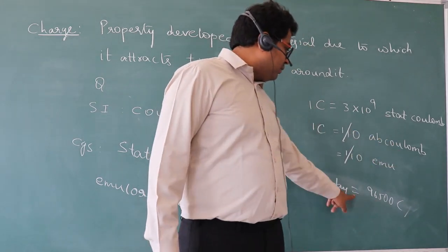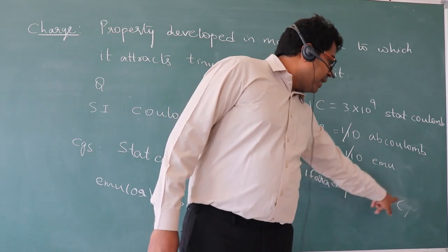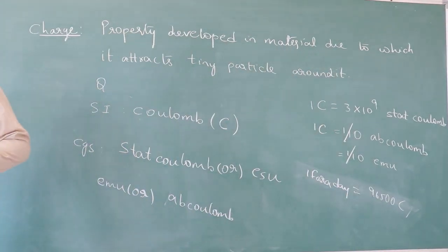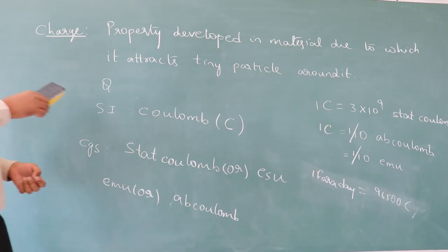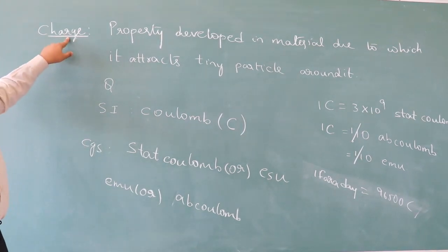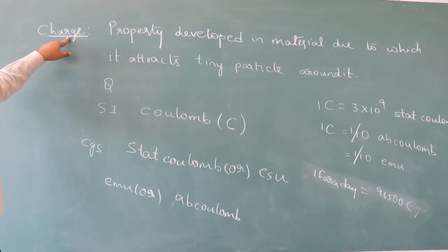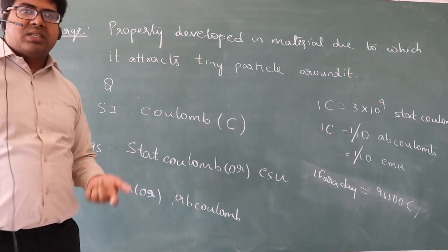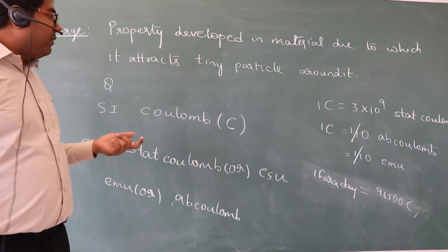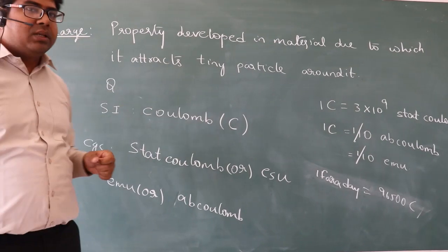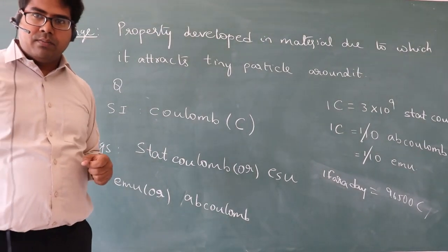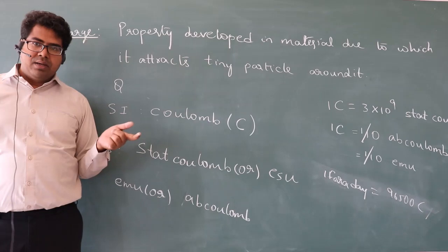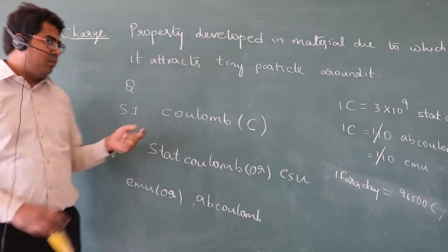1 Faraday is equal to 96,500 coulomb. This is the introduction about charge. Now we know what charge is. Another question that will arise in our mind is: how can this charge be developed, and what are the factors that develop this charge on a body?